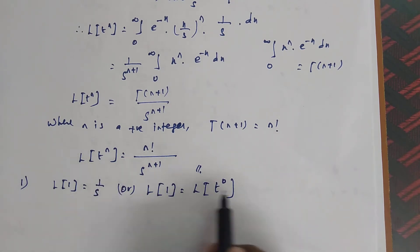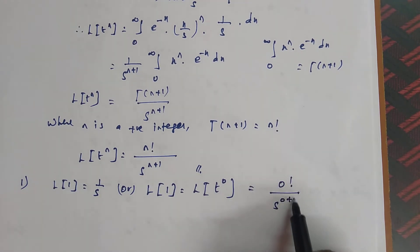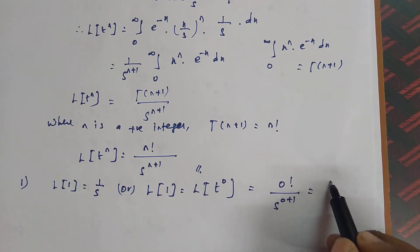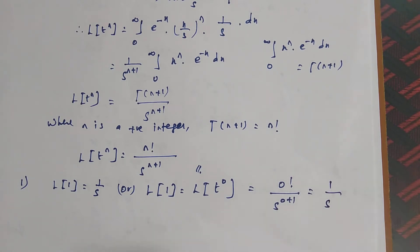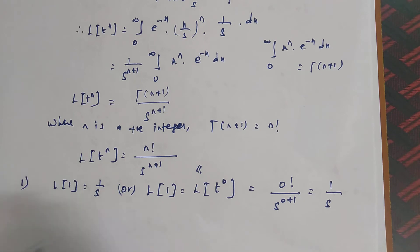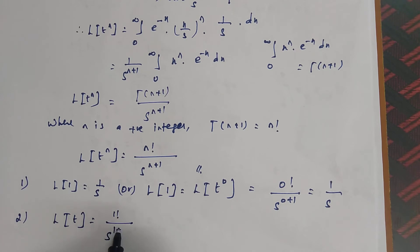Applying the formula with n equal to 0: 0 factorial divided by s power 0 plus 1, and since 0 factorial equals 1, we get 1 by s power 1, which is 1 by s. So both methods give the same answer. For the second example, L of t means n equals 1: 1 factorial divided by s power 1 plus 1, and since 1 factorial equals 1, the answer is 1 by s squared.